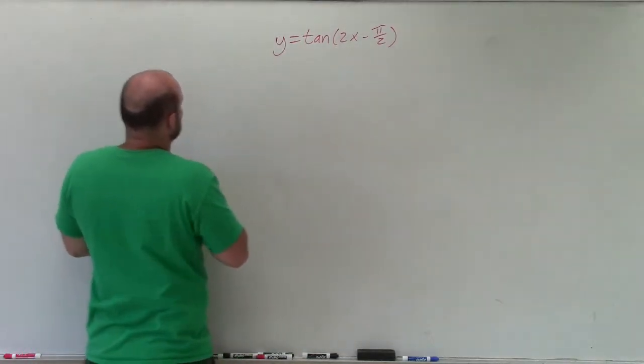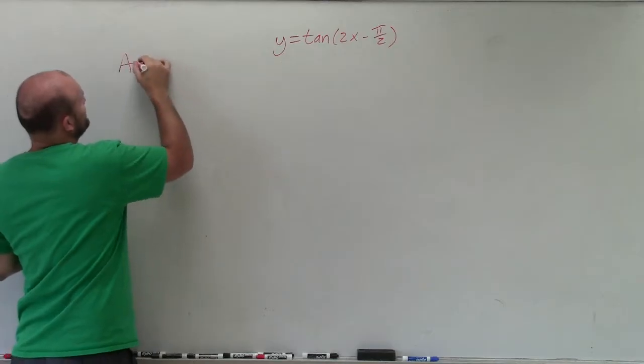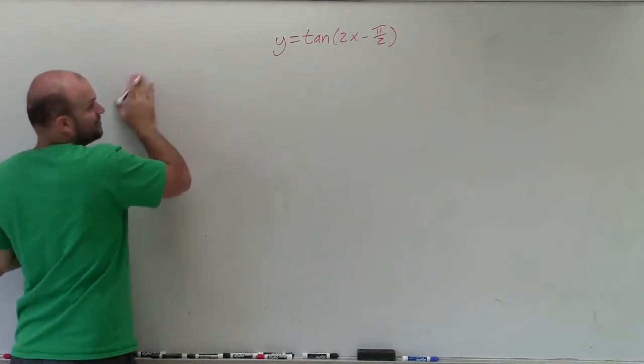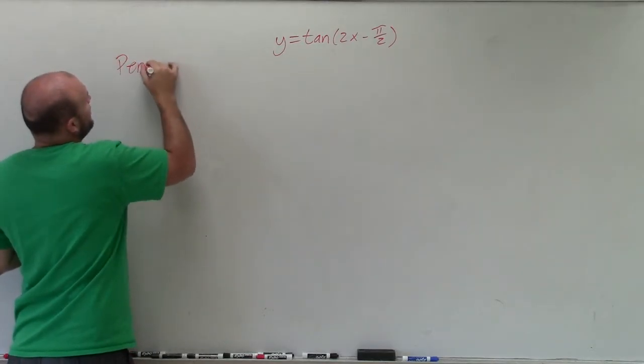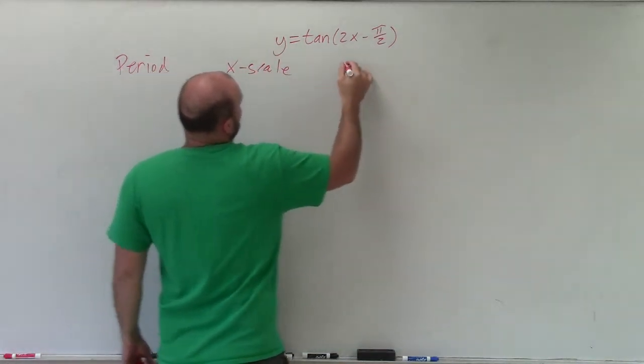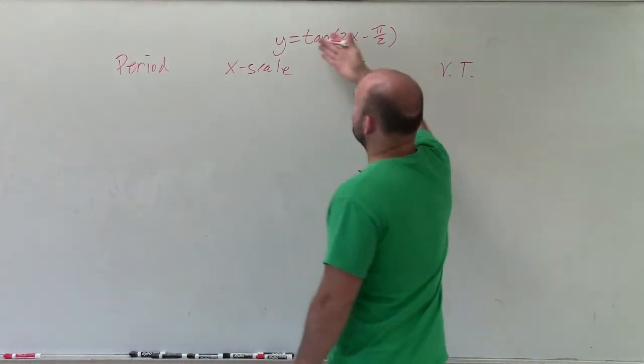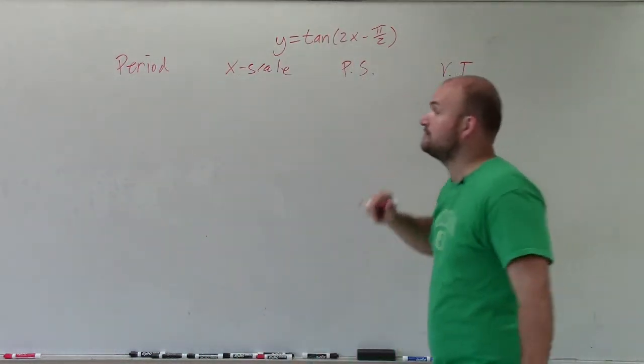So when graphing tangent, rather than just trying to skip through it and make it as quick as possible, well, actually, we don't have an amplitude. Determine and write out what is the period, the x scale, the phase shift, and the vertical transformations. Obviously, we can see there's no reflection, so we don't have to worry about that.